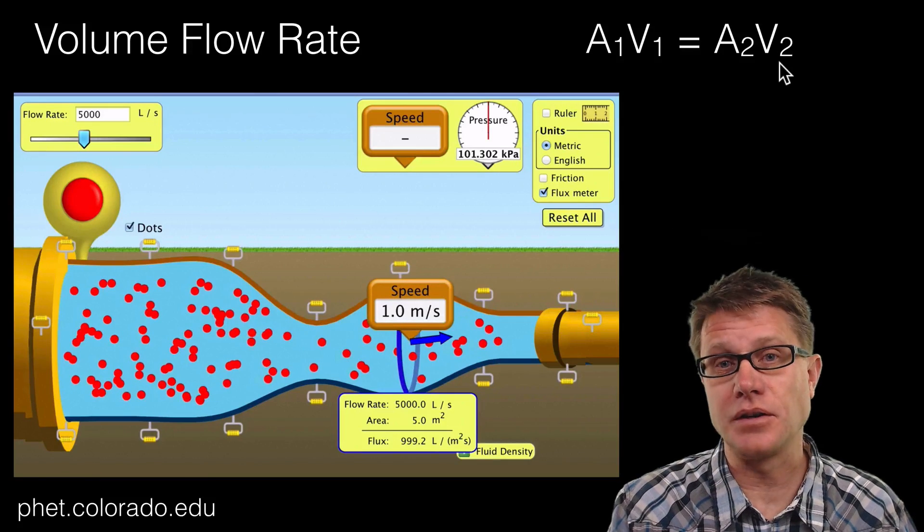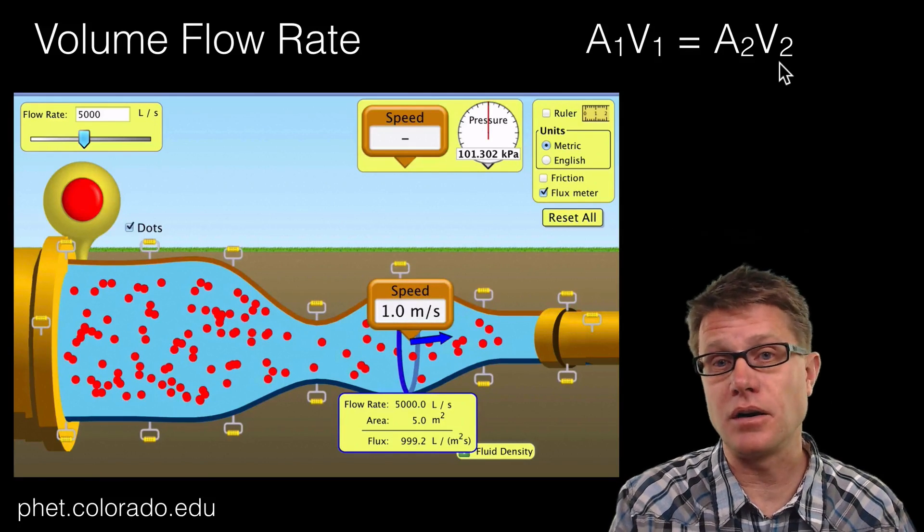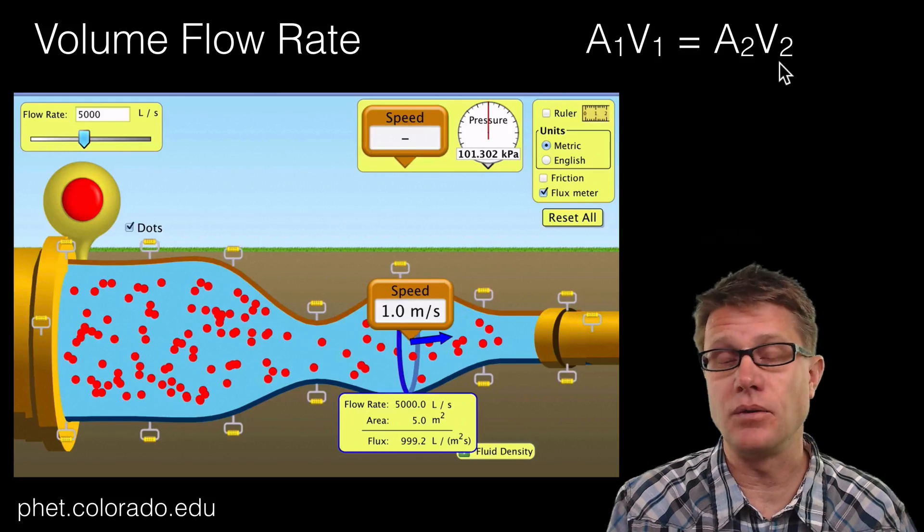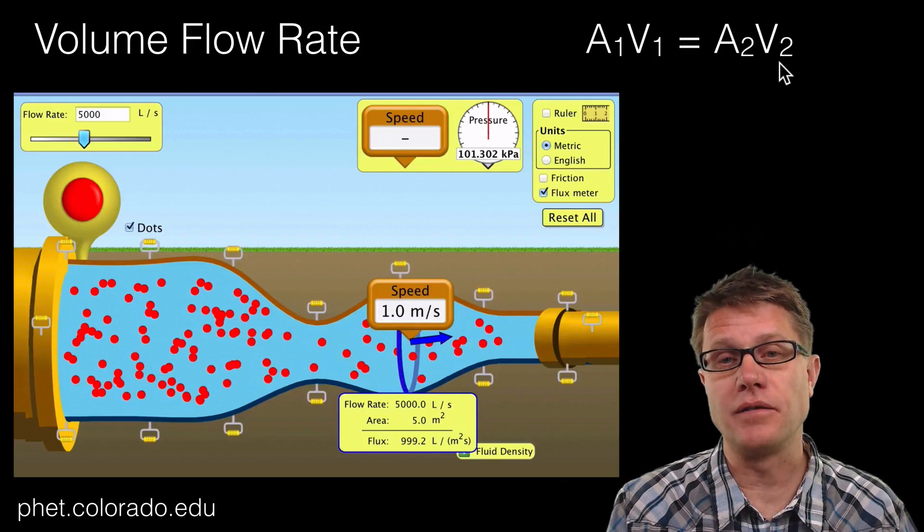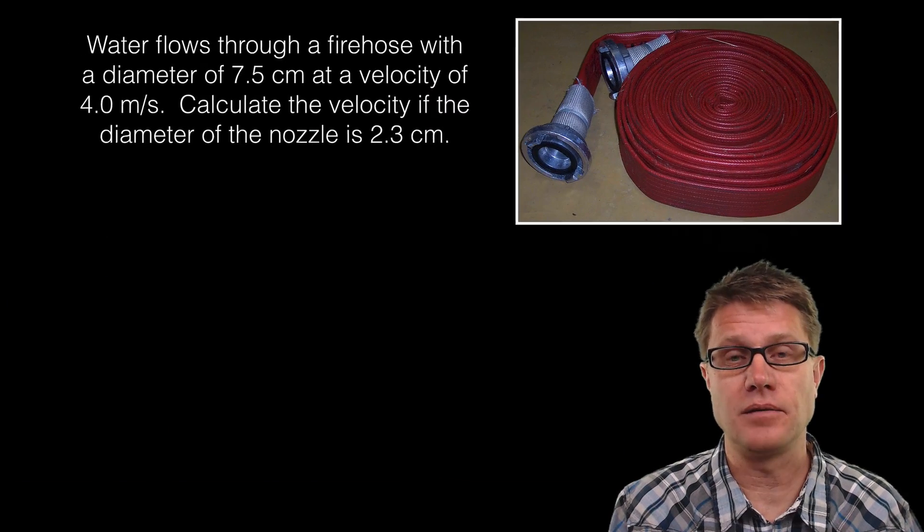And so once you know the cross-sectional area and the velocity in any part of that hose, you could calculate it anywhere else, as long as we have consistent density in the fluid itself.